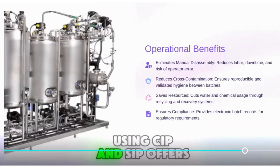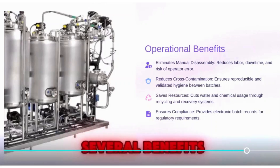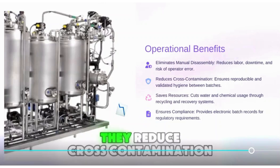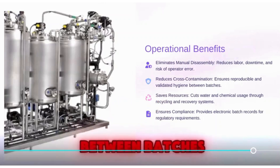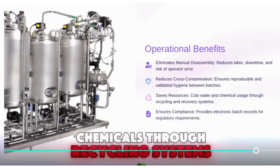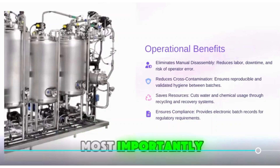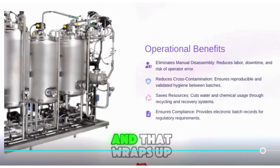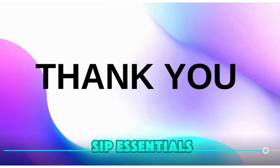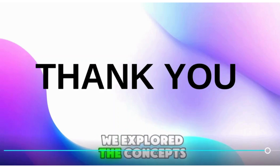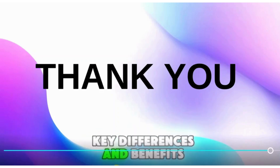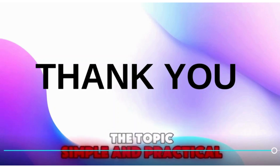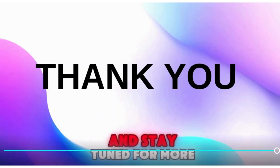Using CIP and SIP offers several benefits. They eliminate manual disassembly, saving time and reducing errors. They reduce cross-contamination between batches and save water and chemicals through recycling systems. Most importantly, they ensure compliance with regulations through validated records. That wraps up our session on CIP versus SIP essentials — we explored the concepts, process steps, key differences, and benefits of integration. Thank you for watching, and stay tuned for more.